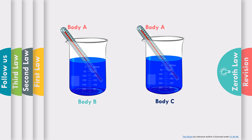To understand the Zeroth Law and the working principle of a thermometer, let us take an example. Consider two beakers named body B and body C, and two thermometers named body A. To measure the temperature of fluid inside body B, I put the thermometer into body B and after some time it shows the temperature — body A is in thermal equilibrium with body B. Similarly, placing the thermometer into body C gives its temperature. Concluding: since body A is in thermal equilibrium with both body B and body C individually, the temperature of body B equals the temperature of body C.